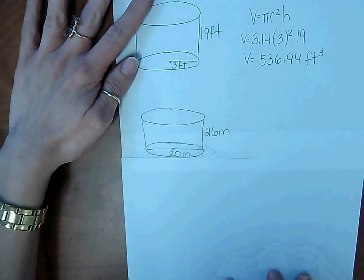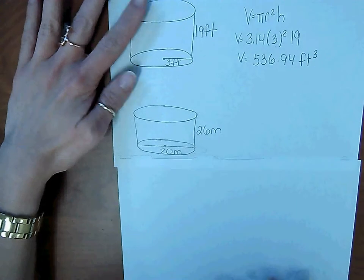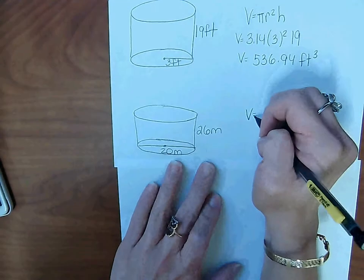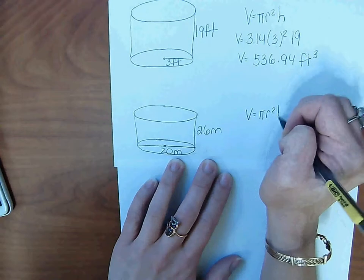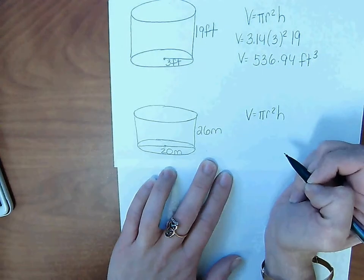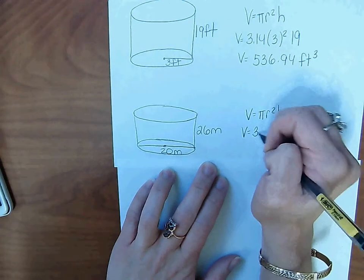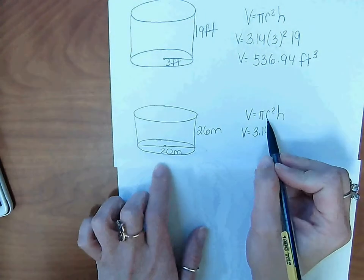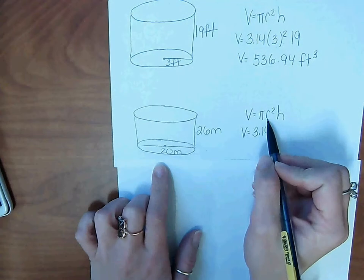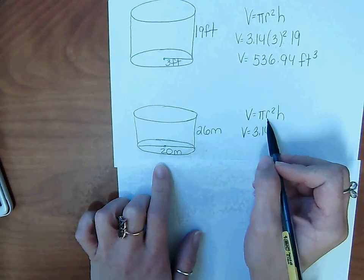In this cylinder, write the formula first. Volume equals pi r squared h. Plug in what you know and solve for what you don't know. So volume equals 3.14. I've got to plug in the radius, but I have to notice that I was not given radius. In this picture, we were given diameter.